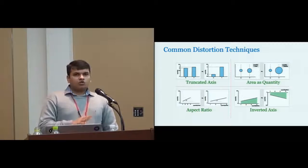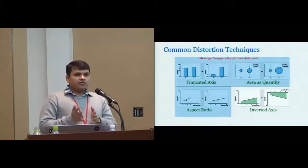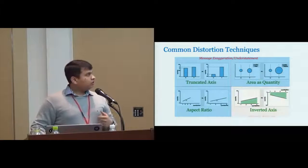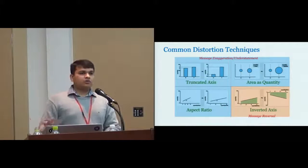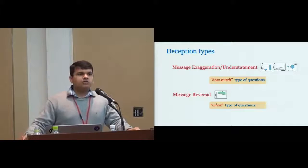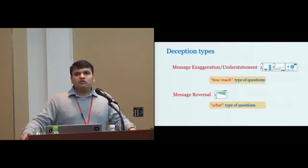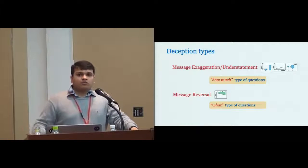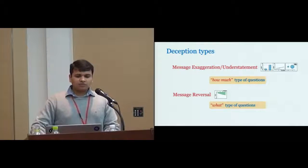Each of these four distortion techniques lead to one of two types of deception. Either the deception is related to message exaggeration or understatement, meaning you have a message and want to exaggerate it. Or your distortion leads to message reversal, where your message was one directional and you're reverting the whole message altogether. For message exaggeration or understatement, you would ask 'how much' type questions to capture the extent of change users feel. For message reversal, you ask 'what' type questions, providing correct and incorrect interpretation to capture users' response.